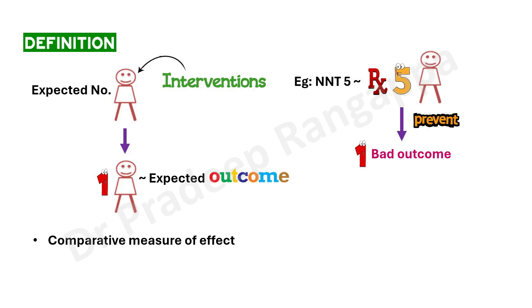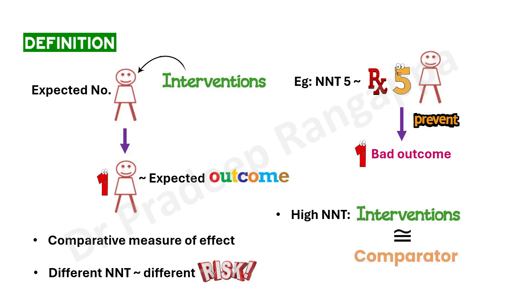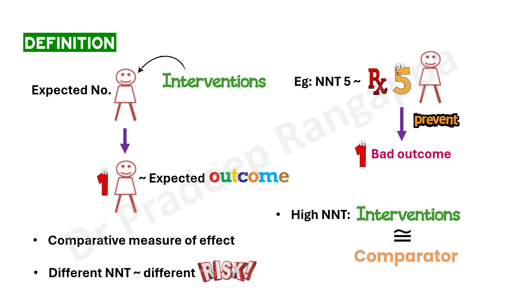NNT is not the same across all contexts — it keeps changing for different risk populations. Simplistically, NNT is the number of patients you need to treat to prevent one bad outcome. A very high NNT — for example, 50 — means the intervention is very similar to the comparator, with no major difference in outcomes.